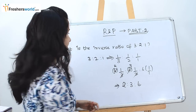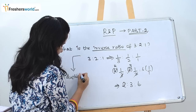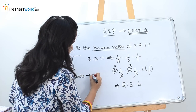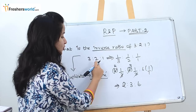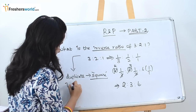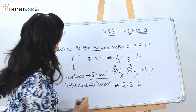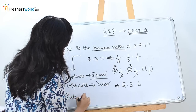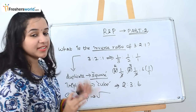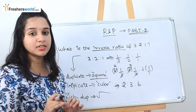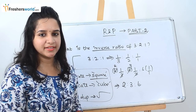There are other related ratio types they can ask about. Duplicate ratio means the square of the ratio. Triplicate ratio means the cube of the ratio. Subduplicate ratio means the square root of the ratio. Remember these four terms — inverse, duplicate, triplicate, and subduplicate — as they appear frequently in examinations.